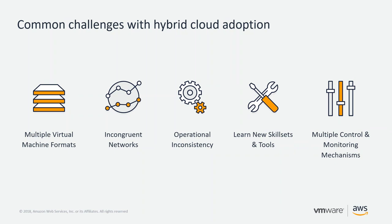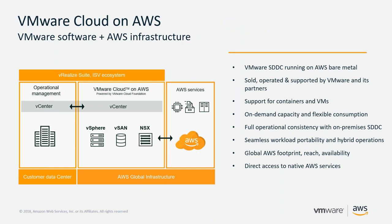With VMware Cloud on AWS, we're looking to eliminate these challenges. You don't have to worry about multiple VM formats — your VMs stay in the same format. You can stretch your network from on-premises to VMware Cloud on AWS. Operational consistency means nothing really changes around your VM processes, and you don't have to learn new skill sets or tools, since you can leverage the familiar vSphere GUI.